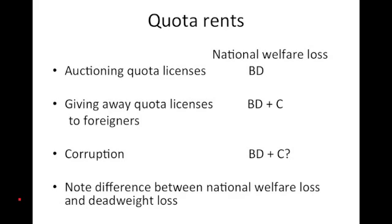The government could also simply give away the licenses to foreigners who are interested in selling this product inside the domestic market. If the licenses are given away to foreigners, then the net welfare effect is B + D — the standard deadweight losses — plus a transfer of area C from domestic consumers to the foreign producers, who pocket the higher profits associated with the protected market.